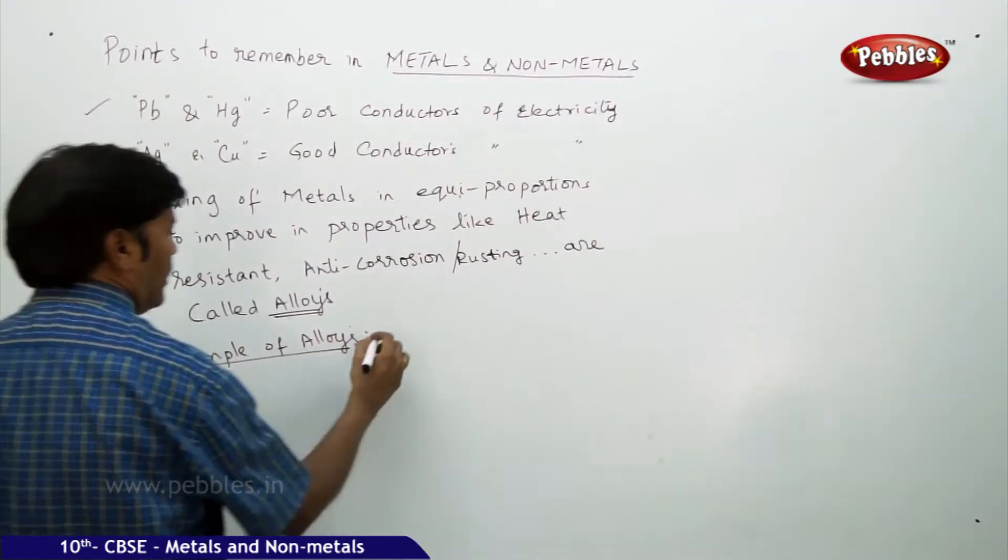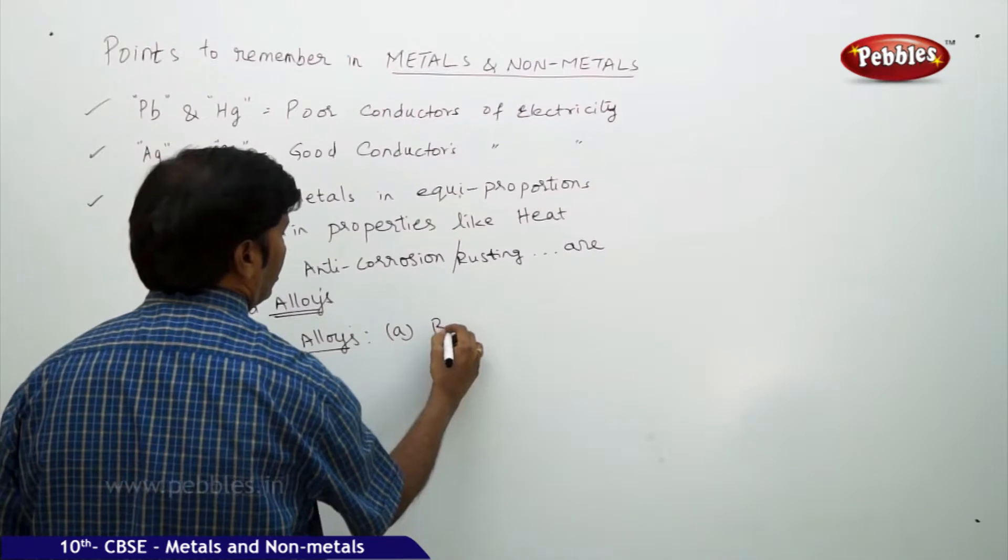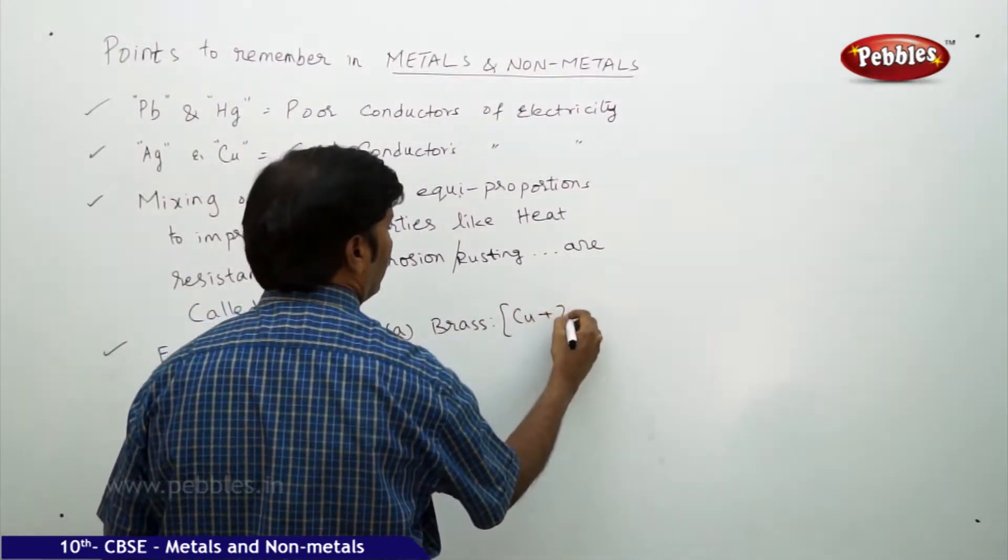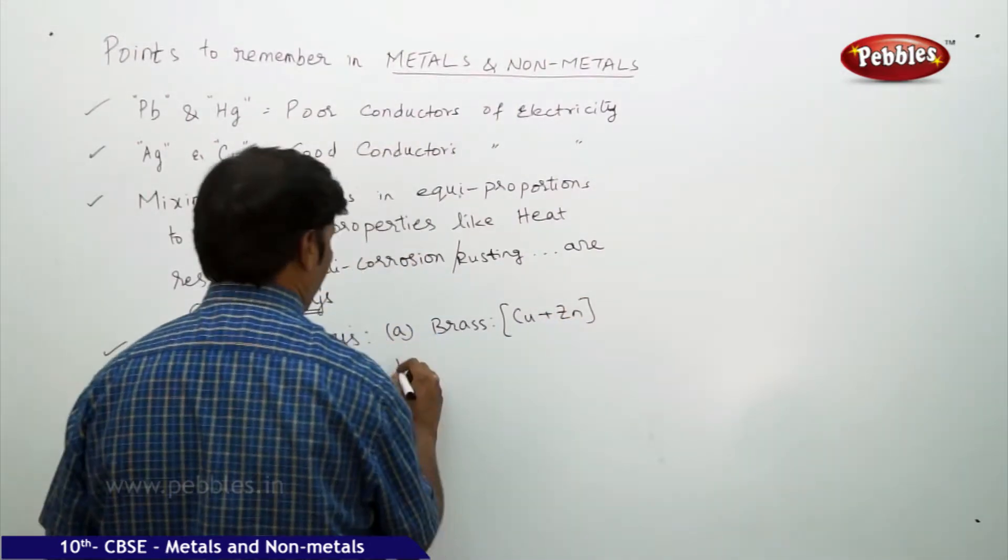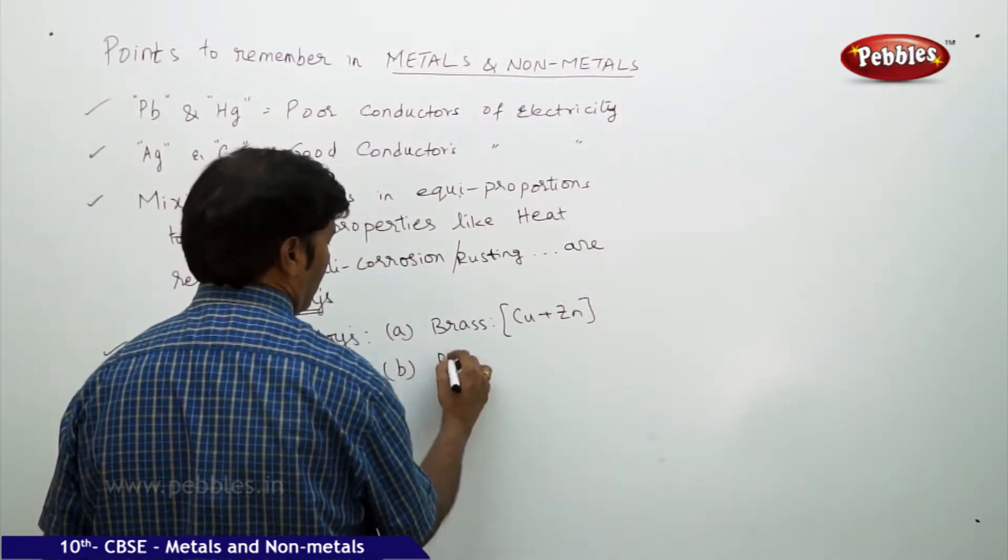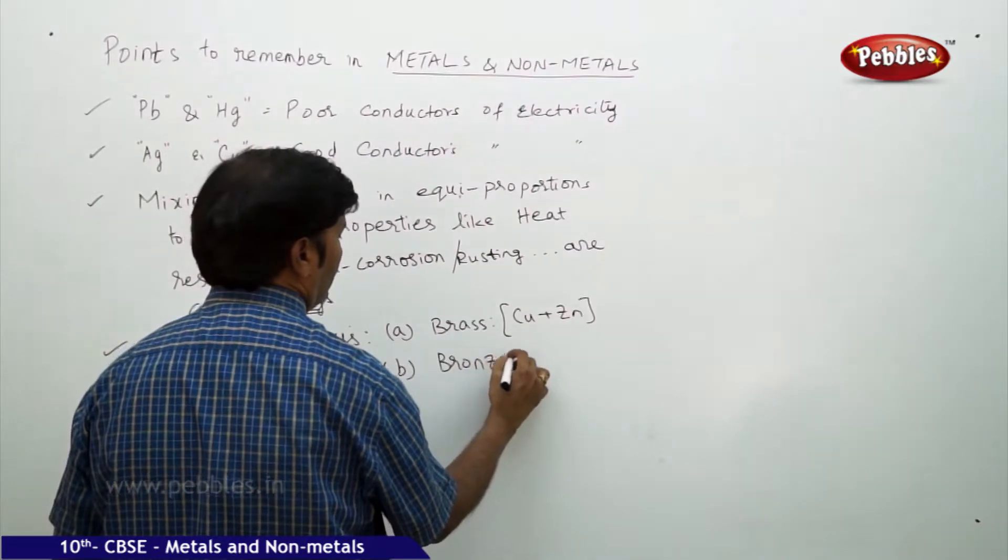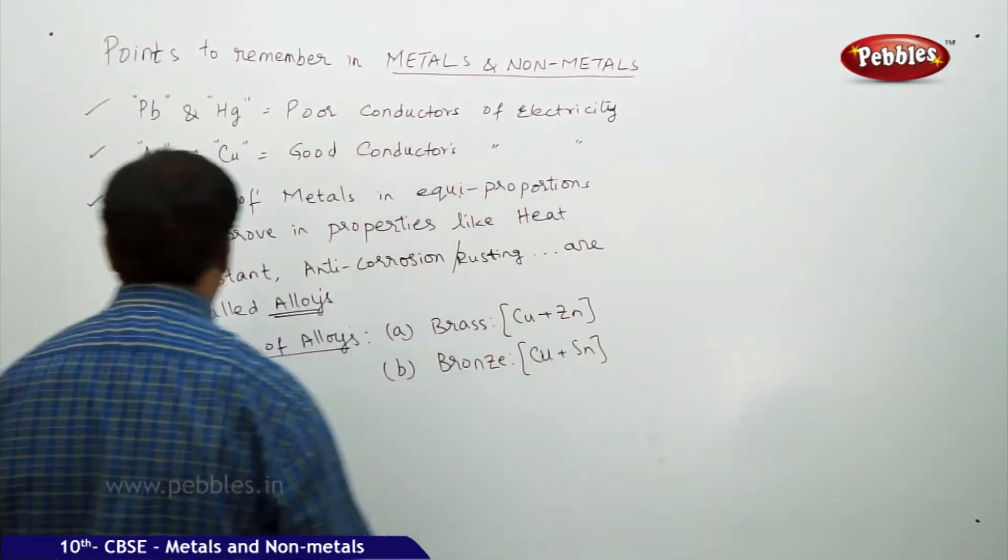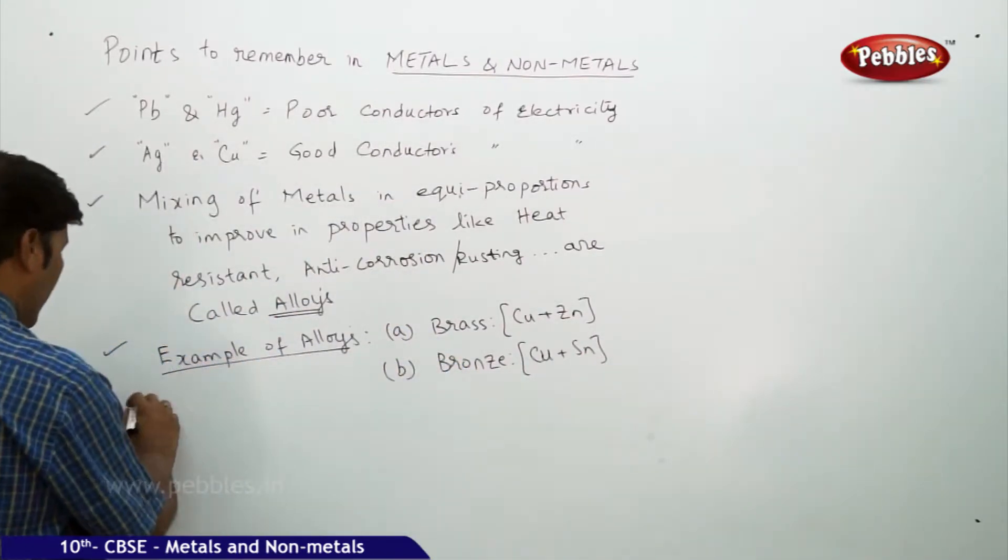Brass, the composition of brass is copper plus zinc, and bronze, copper plus tin.